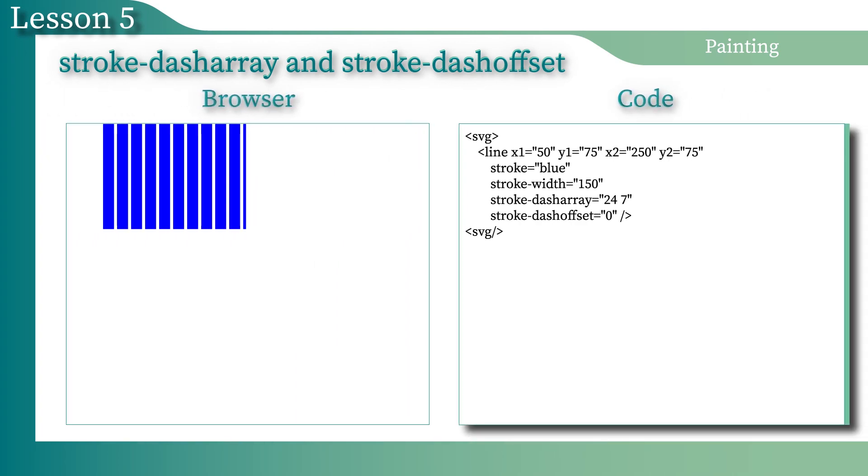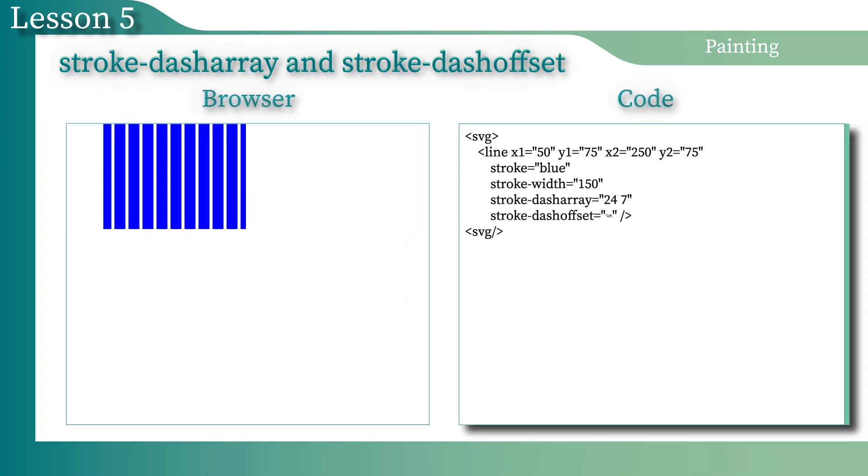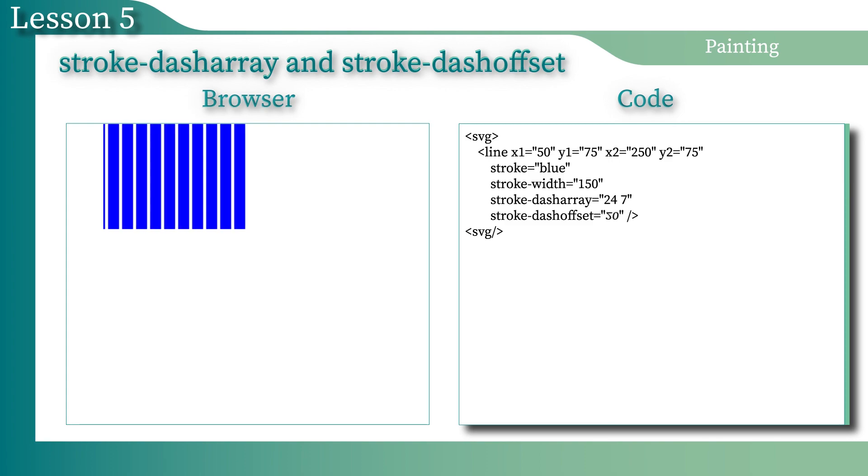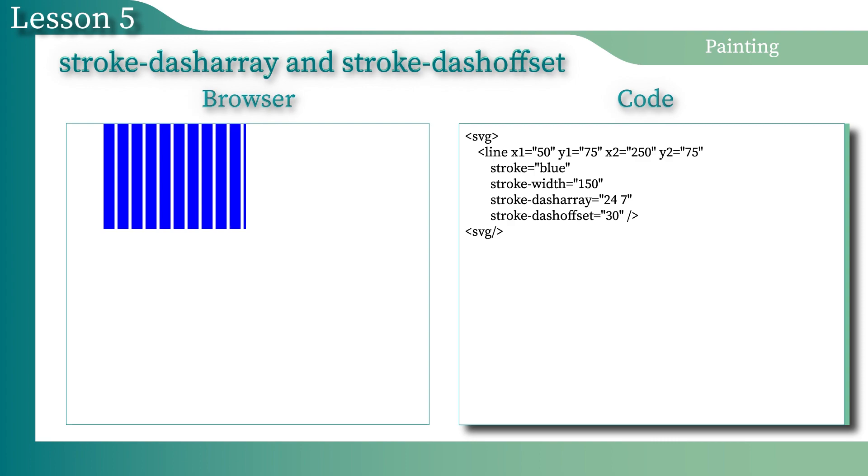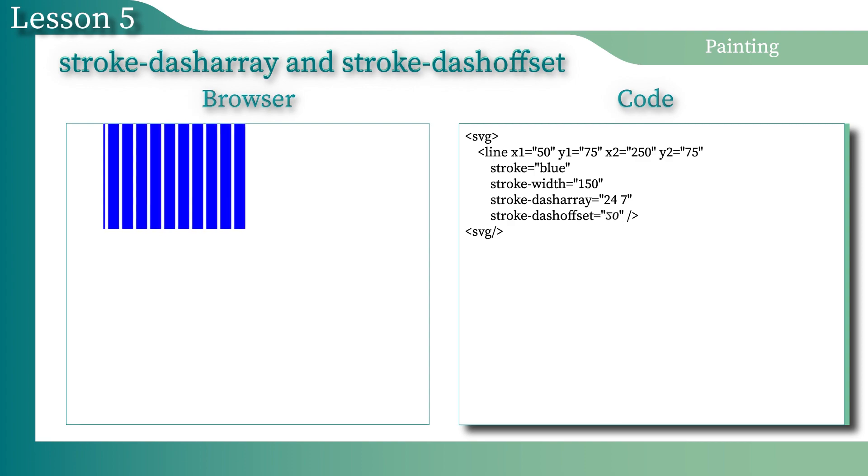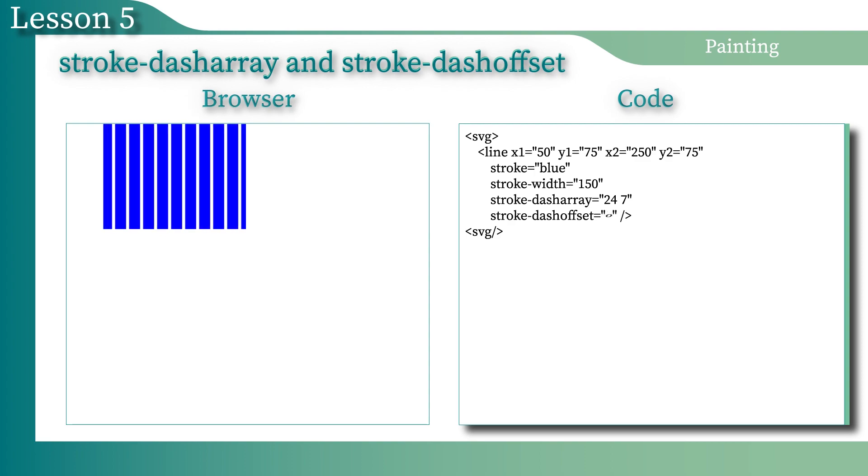The StrokeDashOffset property specifies the distance from the beginning of the path to a StrokeDashArray origin point. Note that the different values of the StrokeDashOffset can lead to the same results. The reason is that the origin point of the DashArray is the point where the first DashArray pattern begins, and it's a relative origin point.